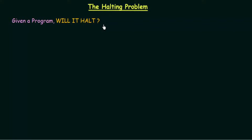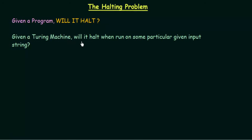Can you have an algorithm that will tell you whether a given program will halt or not? If you put it in terms of a Turing machine, the question becomes: given a Turing machine, will it halt when run on some particular given input string?